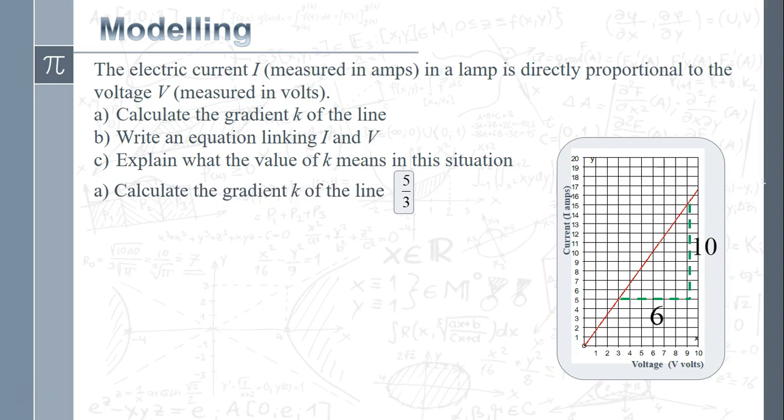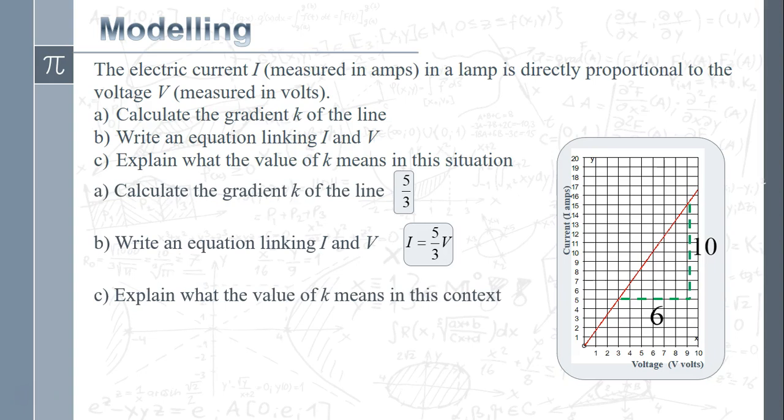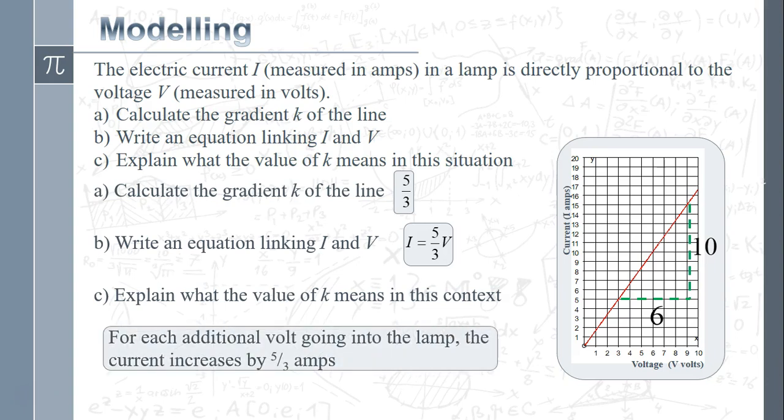The equation linking the two things - we've just got a straight line with gradient 5 over 3, so i equals 5 over 3 v. What the value of k means in this particular context: for every additional one unit of volts means an increase of five thirds in terms of the amps. Every one additional unit of the x variable translates to an increase in however many units of the y variable, in this case the gradient of the line being five thirds.